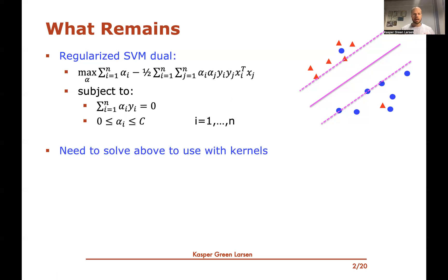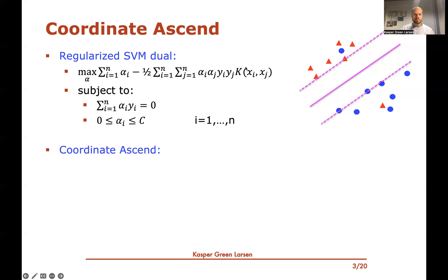So what we need to do now is we would like to solve this optimization problem, particularly we would like to do it just using kernels, just thinking of a kernel being applied here in terms of this inner product. So with this kernel formulation, this is an optimization problem, we have to choose these alphas, and the way we're going to do it is using a technique called coordinate ascent.